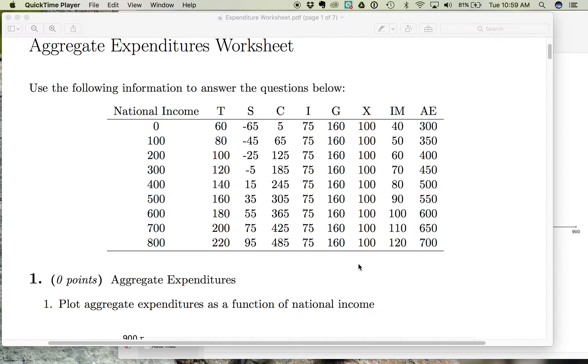Doing our look at aggregate expenditures, we've looked at C. Now that we've looked at consumption spending, we can also look at savings because consumption spending and savings are highly related.